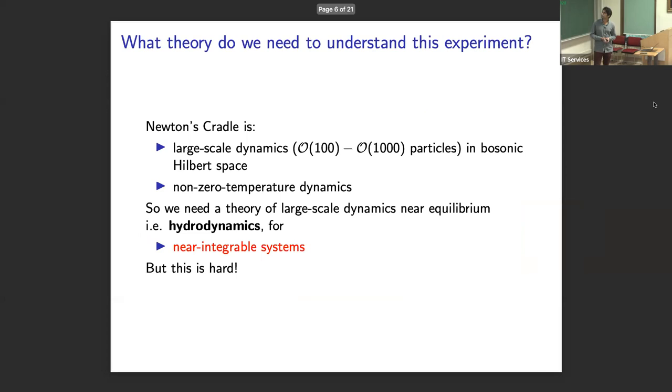So we had this experiment in 2008. And a question you can ask is, what theory do we actually need to describe what we're seeing experimentally? So it's large-scale dynamics. These are order 100 to 1000 particles in a bosonic Hilbert space, which is already harder to control than, say, fermions or spins. And it's also dynamics at non-zero temperature. So this means that in exact treatment, even manipulating, say, beta wave functions, is probably going to be hopeless. You're just not in that kind of regime.